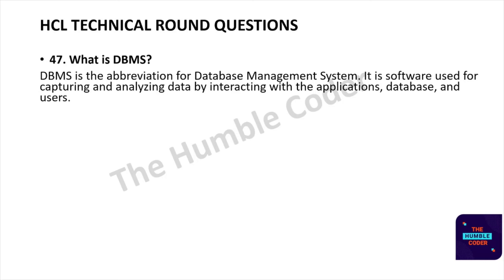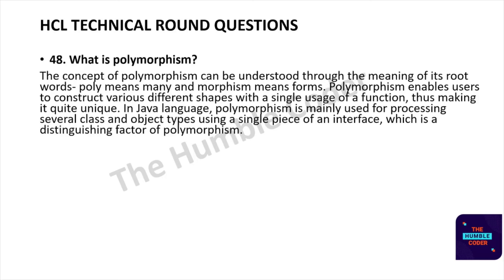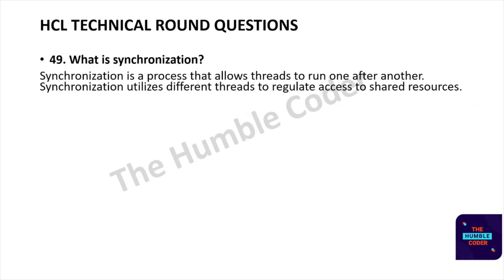The next question is: what is polymorphism? The concept can be understood through its root words — 'poly' means many and 'morphism' means forms. Polymorphism enables users to construct various different shapes with a single usage of a function. In Java, polymorphism is mainly used for processing several class and object types using a single piece of interface. It is one of the core OOP concepts and is very commonly asked in interviews.